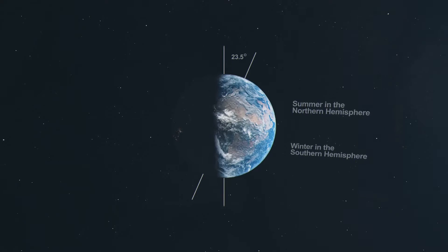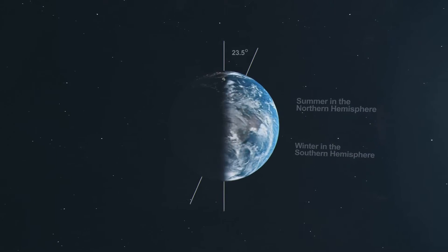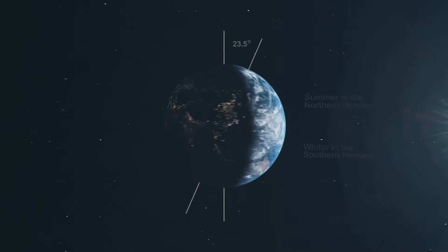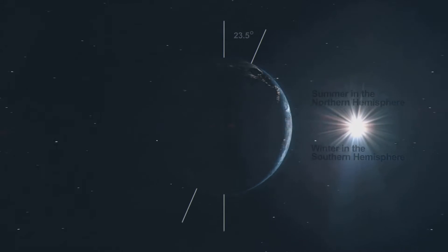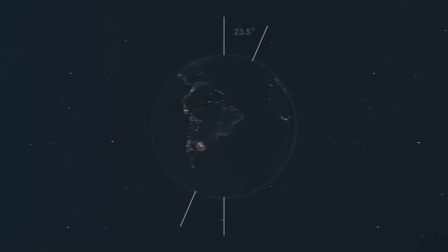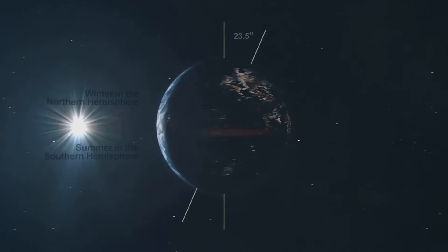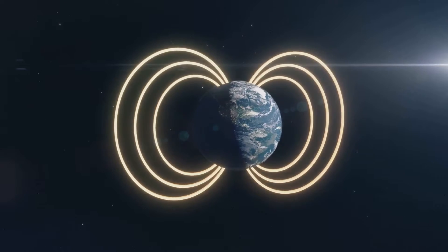Let's dive a bit deeper. The Earth, our home, is like a giant magnet with a north and south pole. Sometimes, in a process that takes thousands of years, these poles flip. This is what we call a geomagnetic reversal.